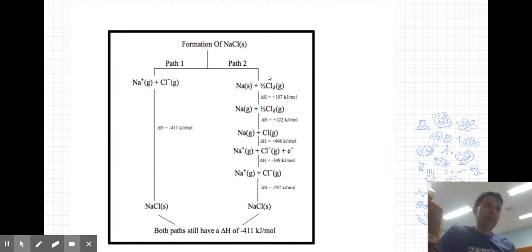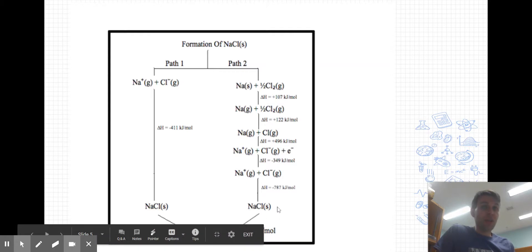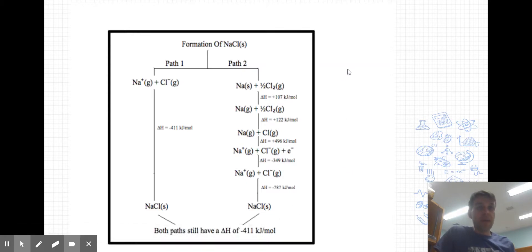As you know, sodium is found in nature as a solid, so a more practical way would be to react solid sodium with chlorine gas, and through a series of steps, we can reach the solid sodium chloride. If you were to sum all of these individual heats of reaction for all the intermediate steps, you end up with the same overall delta H, negative 411 kilojoules per mole.